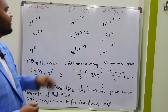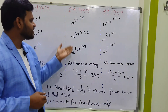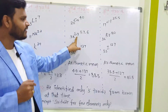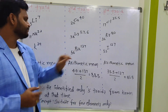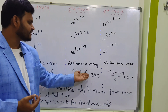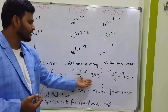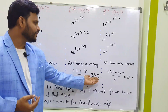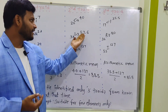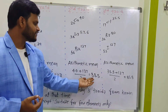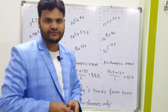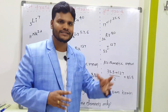For the second triad — calcium, strontium, barium — strontium is the middle element. The arithmetic mean of calcium (40) and barium (137) is approximately 88.5. Strontium's atomic weight is 87.6. The difference is only 0.9, which is negligible.